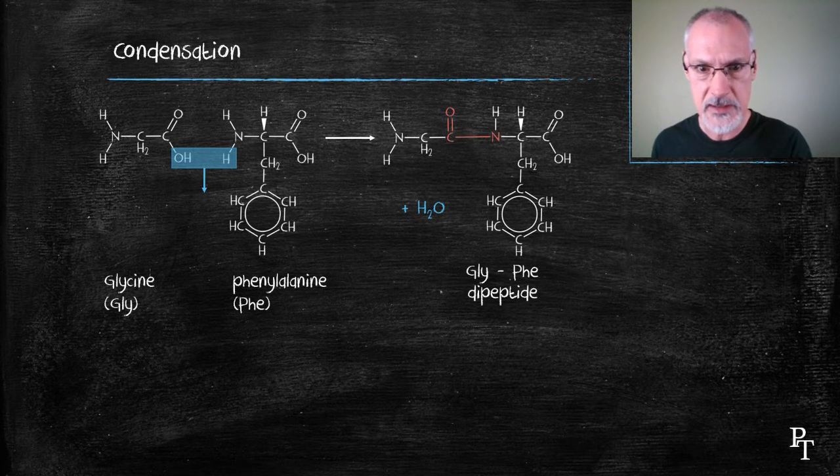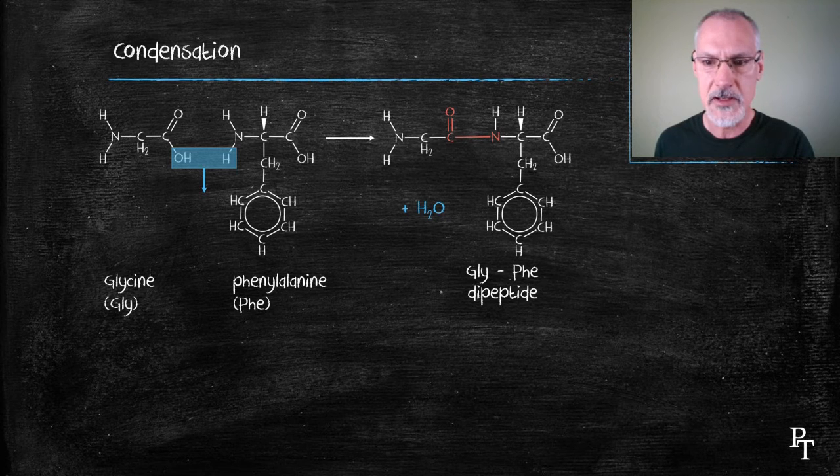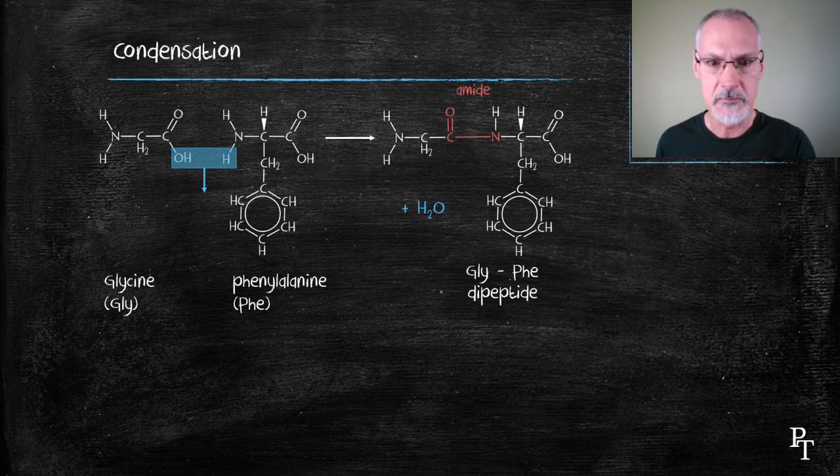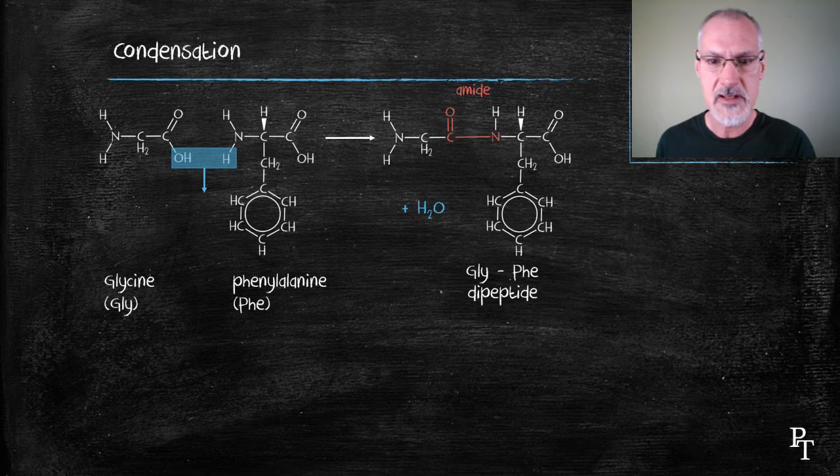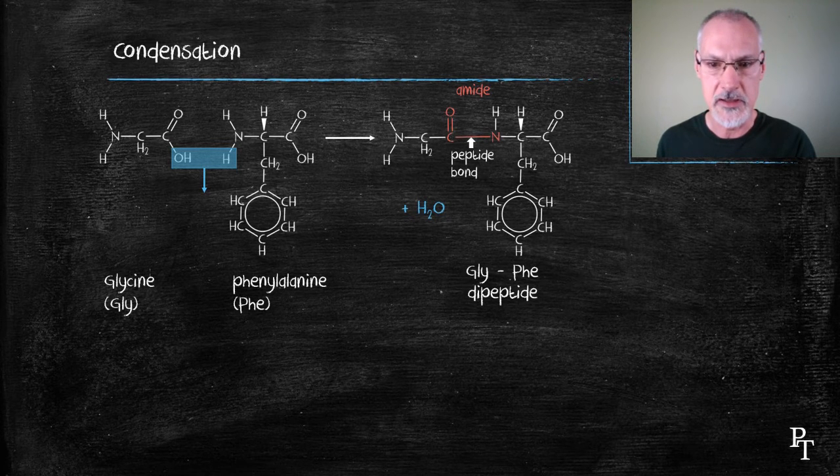Now a little bit about the linkage that exists between the two. First of all, you can recognize that as the amide group from functional groups. And the bond that extends from the carbon to the nitrogen is sometimes called an amide linkage or a peptide bond.